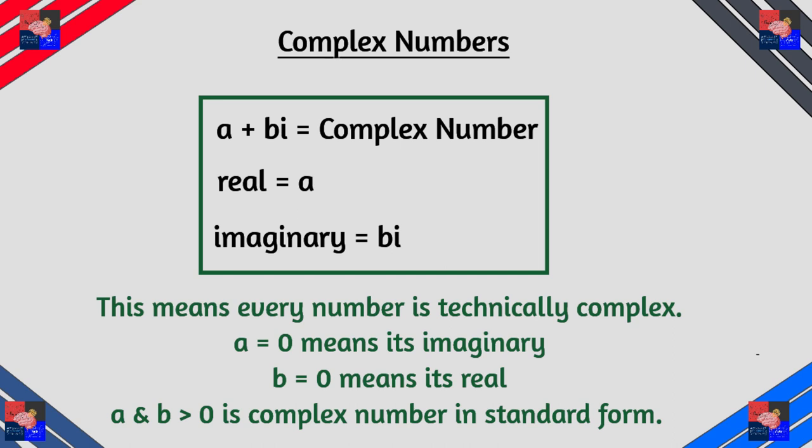And if a is zero then you will get imaginary answers. Complex number in standard form is when a is not equal to zero and b is not equal to zero.